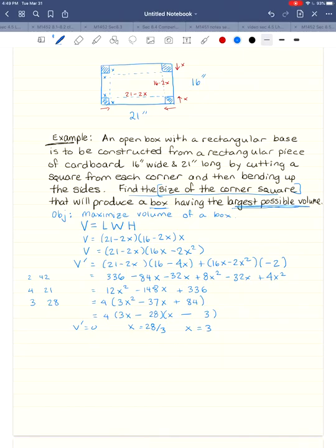All right. So v' is 0 when every factor is 0. So this factor gives me x equals 28 over 3. This factor gives me x is 3. 28 over 3 is 9-ish inches. So if you look back up here at the box, you can't take out 9 inches from two different corners. That's too big. So let's throw it away. It makes no physical sense. This is our only critical number that makes any kind of sense.